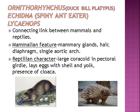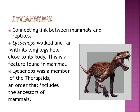Ornithorhynchus (duckbill platypus), Echidna (spiny anteater) and Lystrosaurus are the connecting links between mammals and reptiles. Mammalian features: mammary glands, hair, diaphragm, single aortic arc. Reptilian characters: large coracoid in pectoral girdle, lays eggs with shell and yolk, presence of cloaca. Lystrosaurus walked and ran with its long legs held close to its body — a feature found in mammals — and was a member of Therapsids, an order that includes the ancestors of mammals.